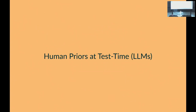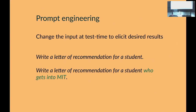That was all about things you can do to input data before training. What happens when your model is done training and deployed — at test time, at inference time? How do we encode human priors there? For this I'll focus on large language models — LLMs — which have taken over the news, all the way to my grandparents knowing what they are. Chat GPT, GPT-3, GPT-3.5.